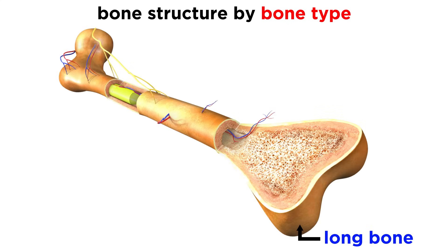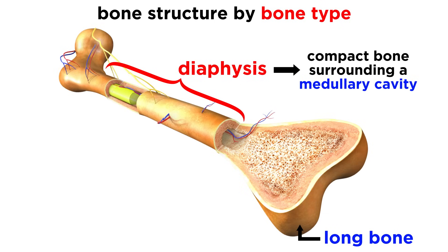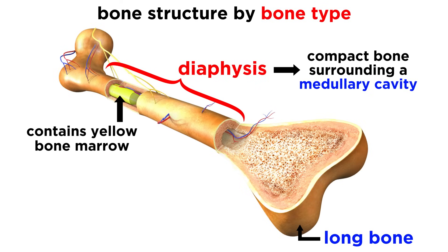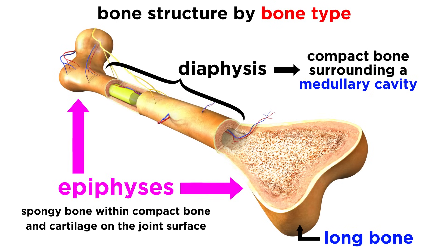Long bones are a little different. These contain a tubular shaft called a diaphysis. This is made of a thick collar of compact bone surrounding a medullary cavity, or marrow cavity. In adults, this cavity contains yellow bone marrow, which is high in fat. The ends of a long bone are called epiphyses. These parts do contain spongy bone inside the compact bone, and cartilage covers the joint surface for cushion and stress absorption.